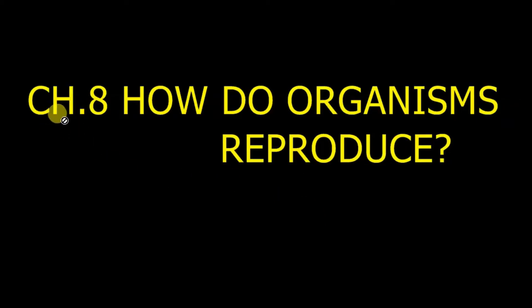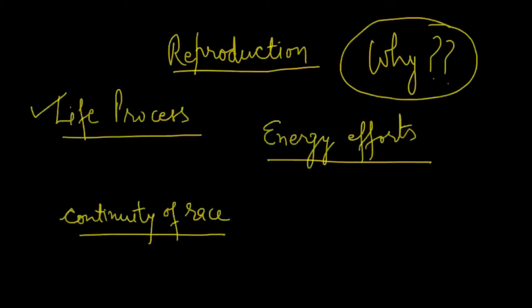Hello students, we are doing a revision of chapter 8: how do organisms reproduce. So what is reproduction? The process of producing new individuals is known as reproduction. Unlike other life processes, it is not necessary for the survival of the individual because a lot of energy and efforts are wasted. But still, why is it done? It is done to ensure continuity of the race.